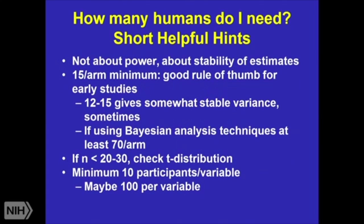A few of our examples — the short answer, because I always get asked this question: how many humans do I need when I know nothing? You may run one of these calculations that tells you only need three people per arm. You will need more than three people per arm. Fifteen people per arm, or rats per arm, tend to be the minimum number. This is a good rule of thumb for early studies.